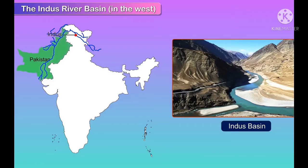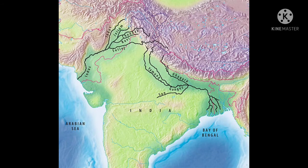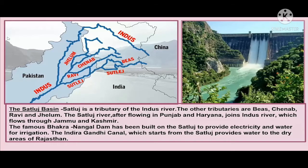A question arises: why are we saying Satludj basin and not Indus basin? It is because the Indus river flows majorly in Pakistan. The Indus river is a northwest flowing river which flows through Jammu and Kashmir and then towards Pakistan. So in India, we will discuss the Satludj basin — the river Satludj, which is a tributary of the Indus river. The other tributaries of the Indus river are Beas, Chenab, Ravi and Jhelum. The Satludj river, after flowing through Punjab and Haryana, joins the Indus river.